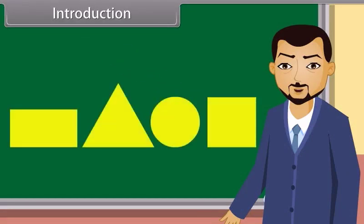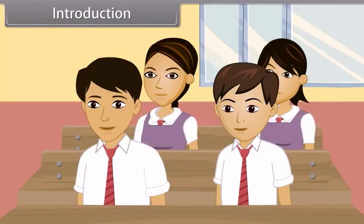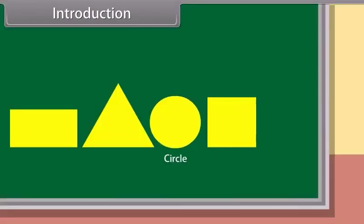I will draw some shapes on the blackboard. You have to tell me their names. This is a circle, and this is a rectangle. This is a triangle, and this is a square, sir.